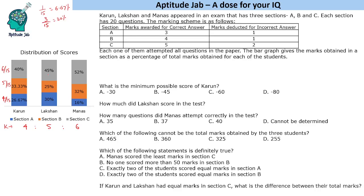For Lakshan, looking at the bar graph values, since these are all multiples of 5, we can express the ratio as 6 : 5 : 9. For the third person, Manas, since the values are all divisible by 4, his scores in the three sections are in the ratio 4 : 8 : 13.